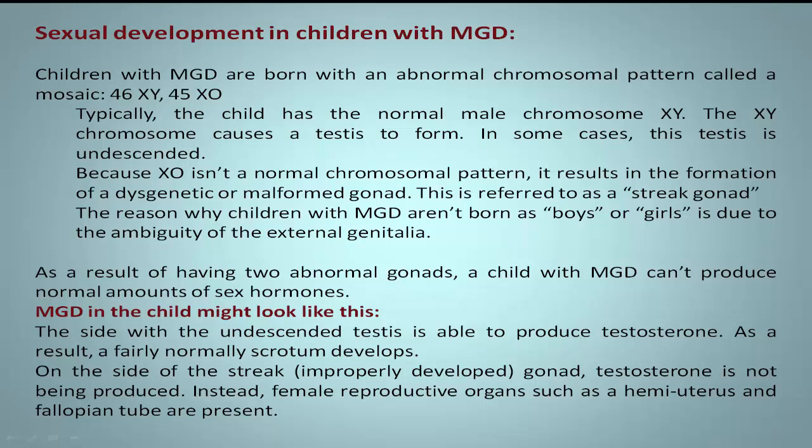MGD in the child might look like this. The side with the undescended testes is able to produce testosterone. As a result, a fairly normal scrotum develops.